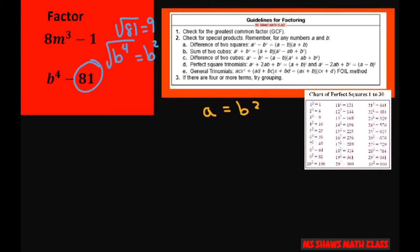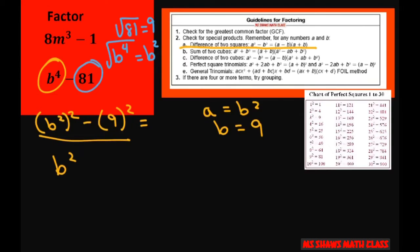And your b is 9. And now we're going to use the difference of two squares. So I have b squared squared minus 9 squared equals, and then you expand, this is going to be b squared minus 9 times b squared plus 9.